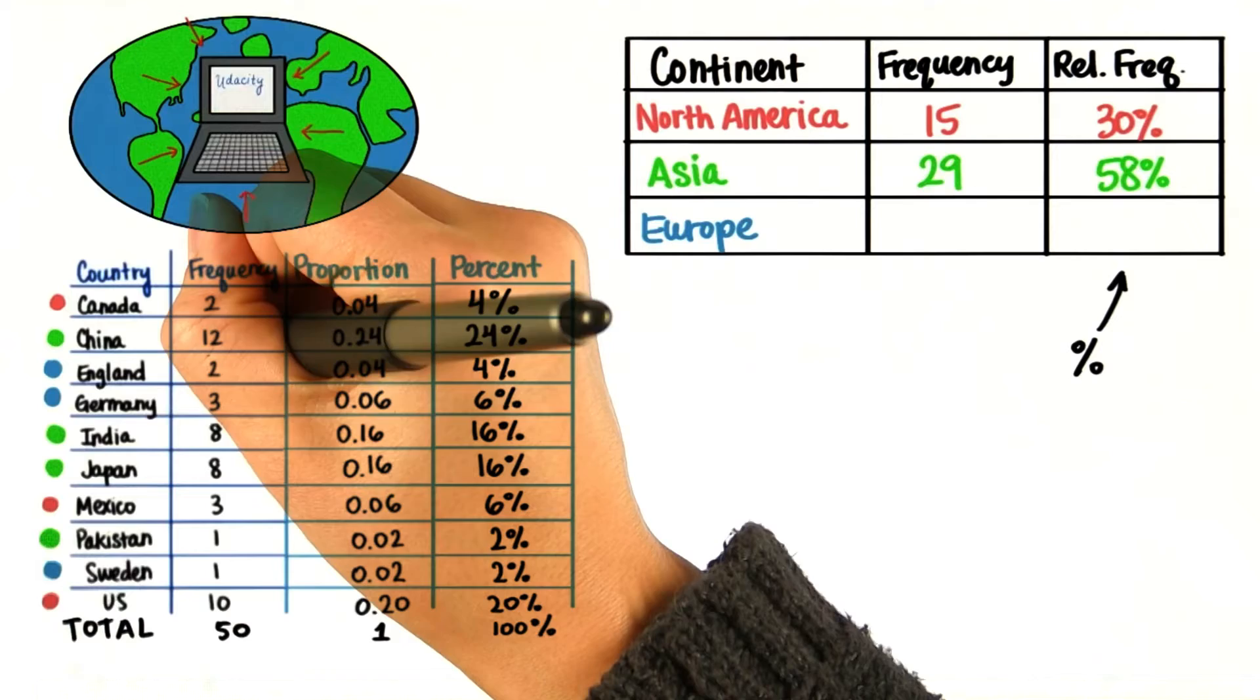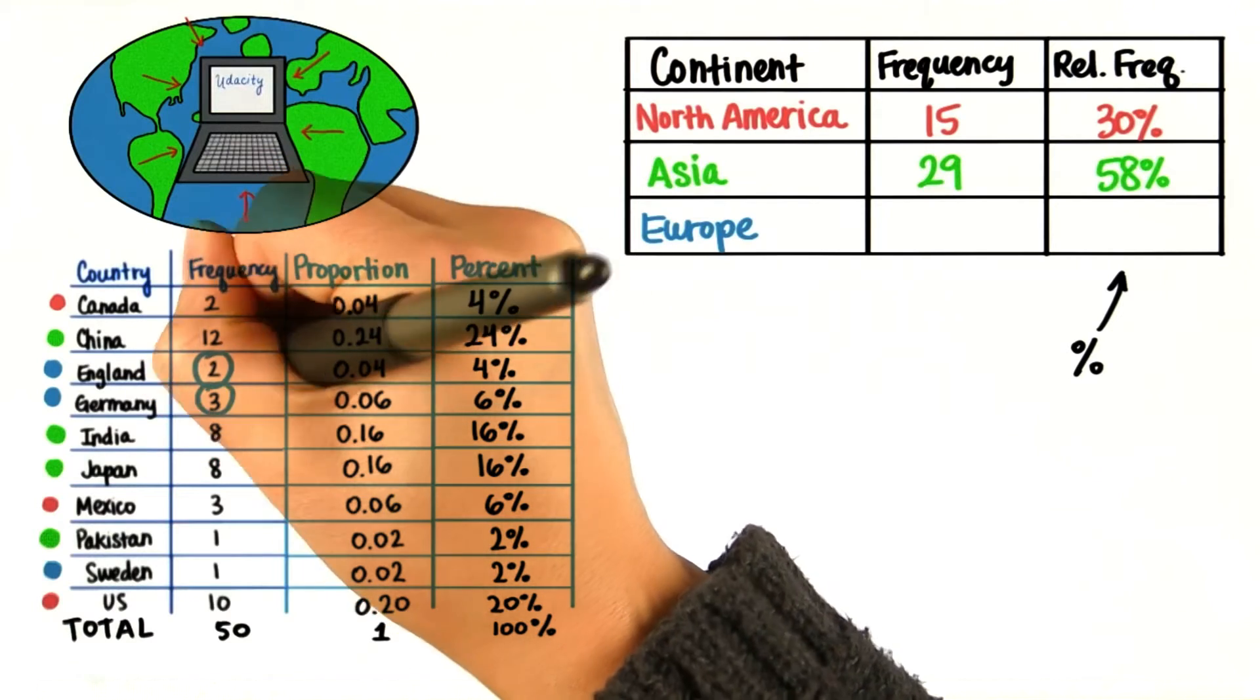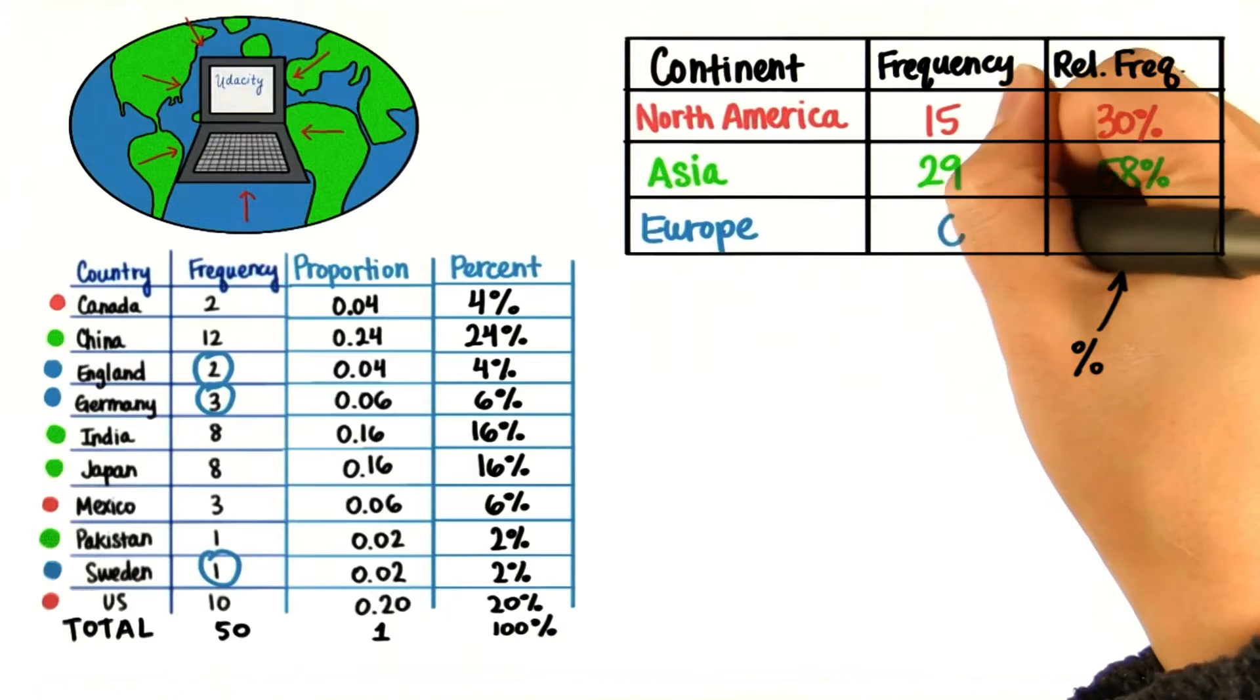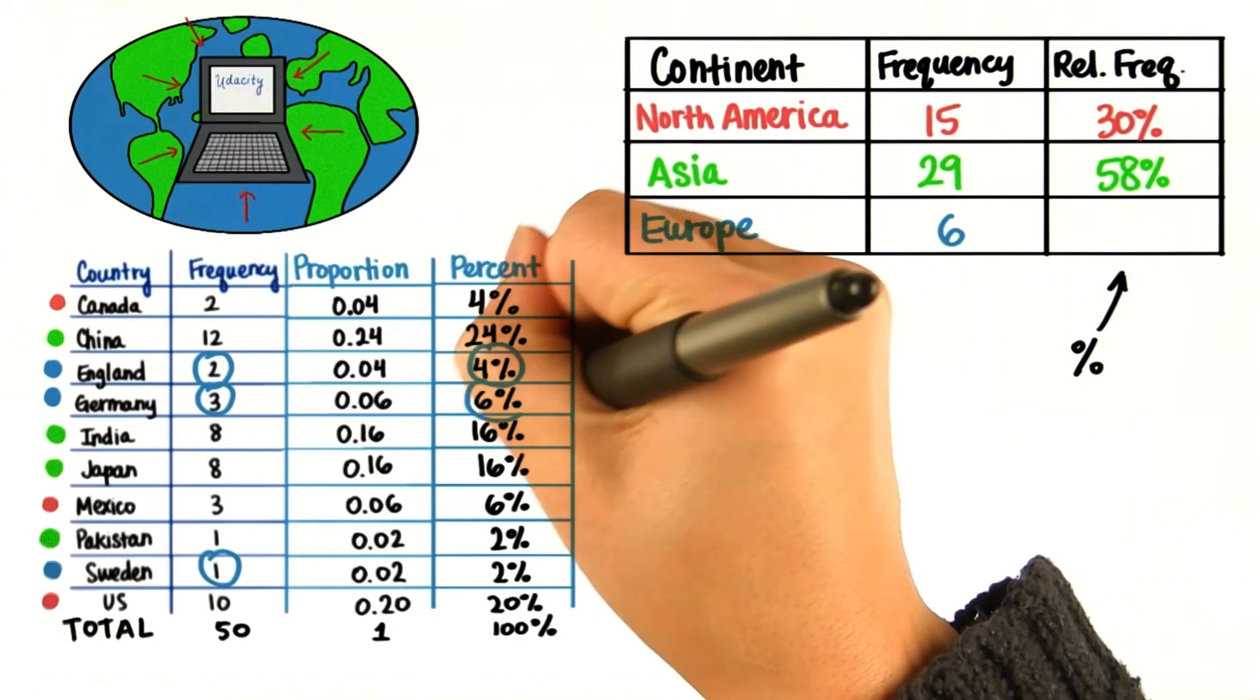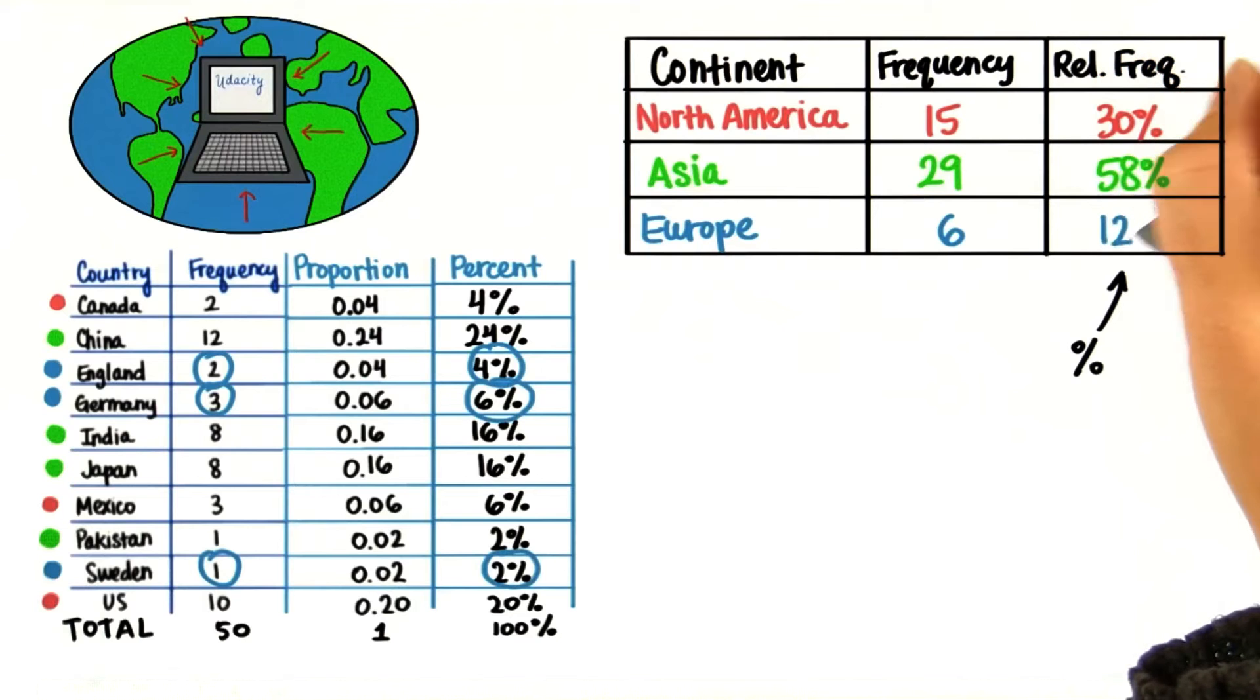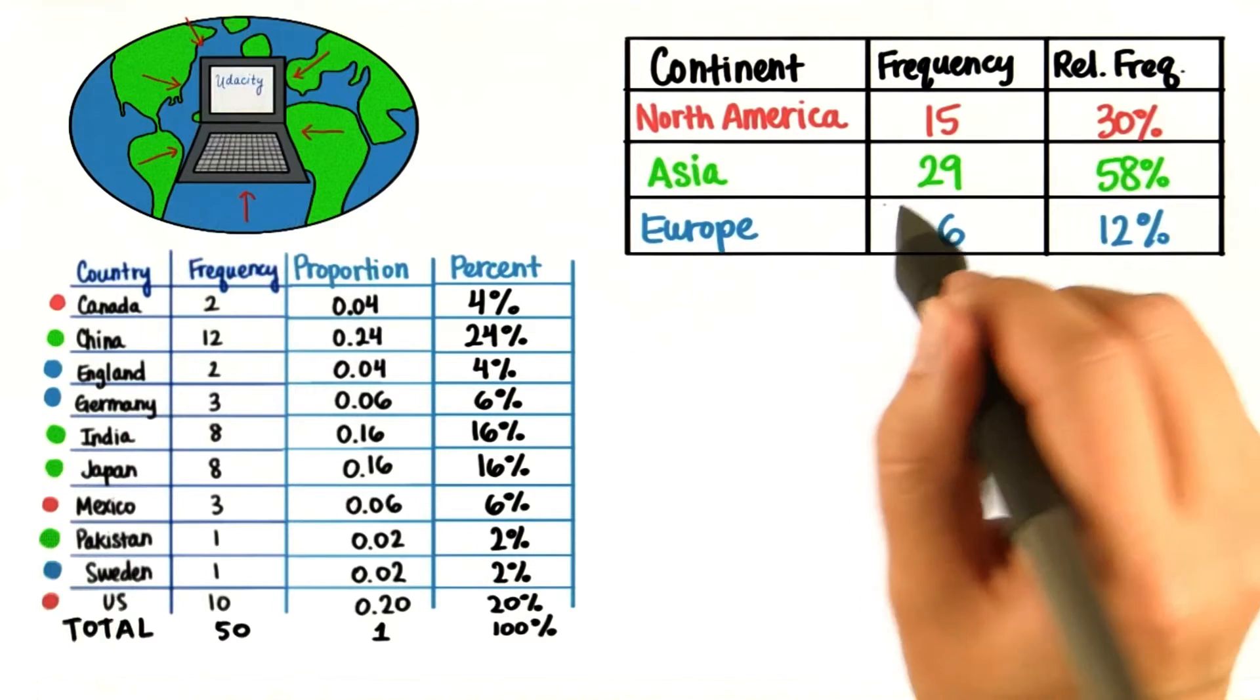And finally, we have 2 from England, 3 from Germany, and 1 from Sweden, making 6 from Europe. 4% plus 6% plus 2% is 12%. So now we have even more simplified data.